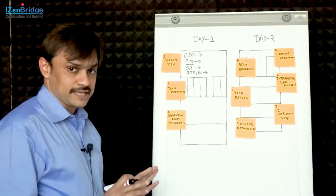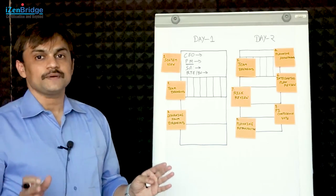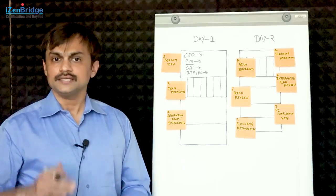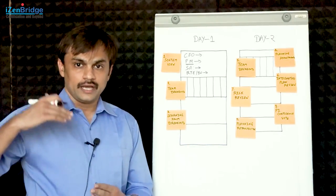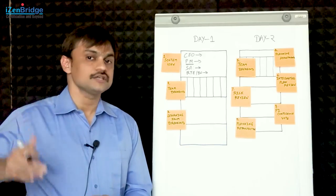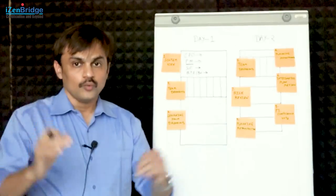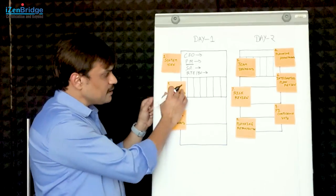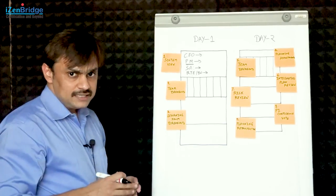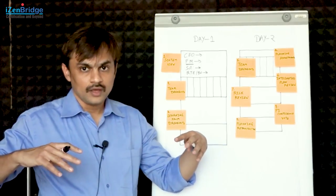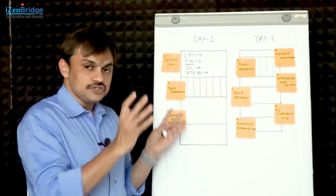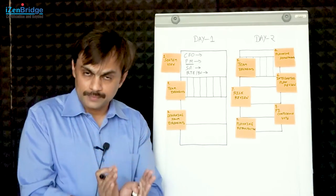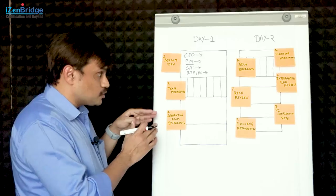Once we are done with this particular section, each Agile team is expected to know where we stand and what we need to do in order to make this PI successful - what are the milestones and what features or set of things will help us achieve those milestones. We know what is expected from us and we know integratedly where we stand. Then the release train engineer may come in and facilitate team-level planning. In this team breakout room, the features which individual teams are picking up need to get planned in a detailed manner.